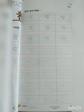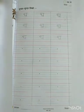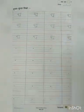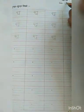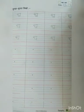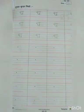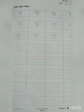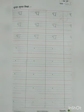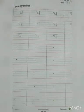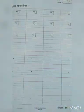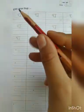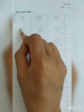Now kids, open your page number 41 in which you will find cha — cha se chamach. Mention your date 23-09-20. So kids, now we will write cha. We have already written it — one time in your workbook and so many times in your notebook. So it is very easy to write. You have to leave the first line because it is already done. You will start with the next line.